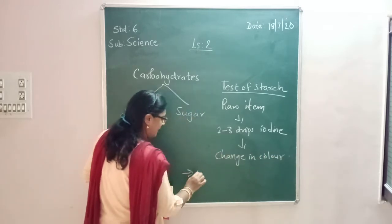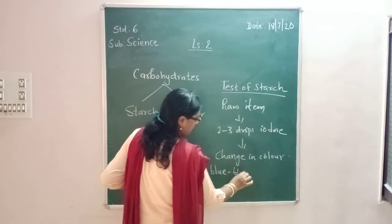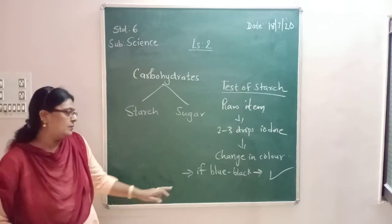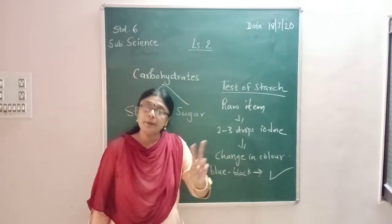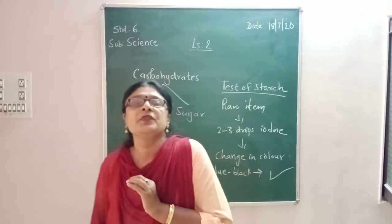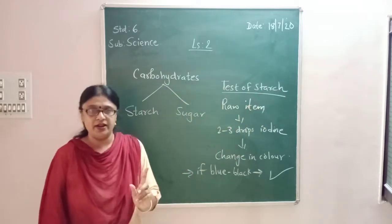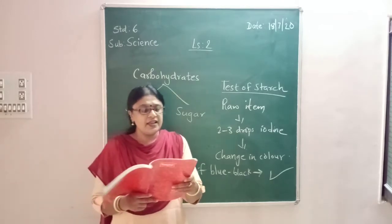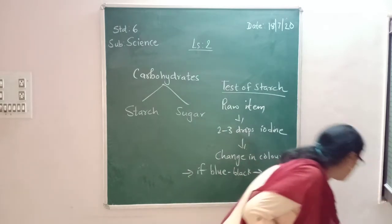If that food item is converted to blue or black color, then that food item contains starch, which means it contains carbohydrates. Repeat this test with the other food items to find out whether starch is present or not.